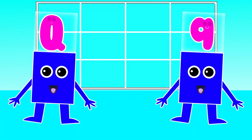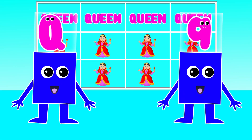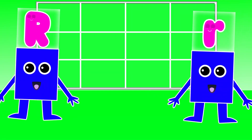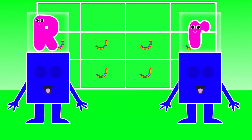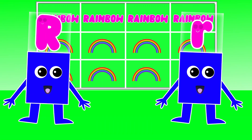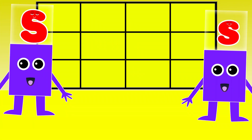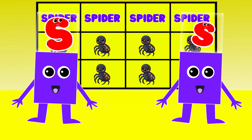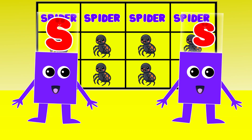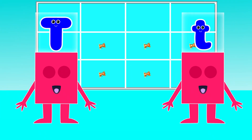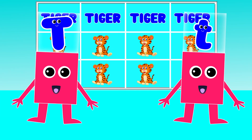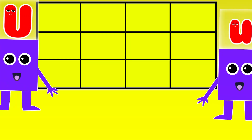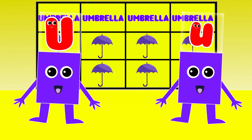Q is for Queen. Q, Q. Queen. R is for Rainbow. R, R. Rainbow. S is for Spider. S, S. Spider. T is for Tiger. T, T. Tiger.